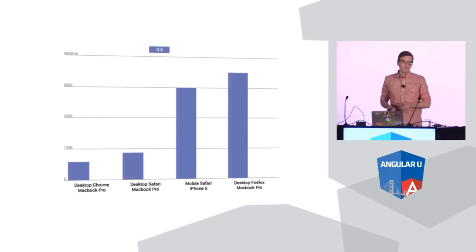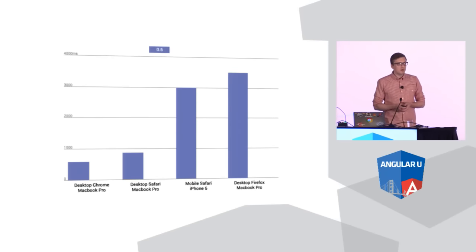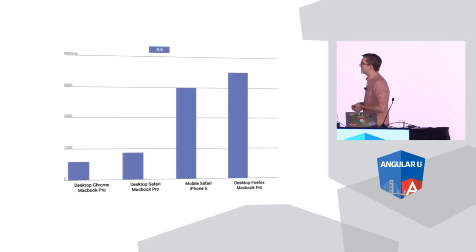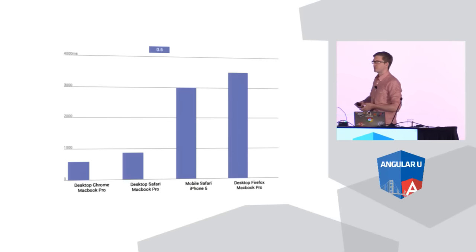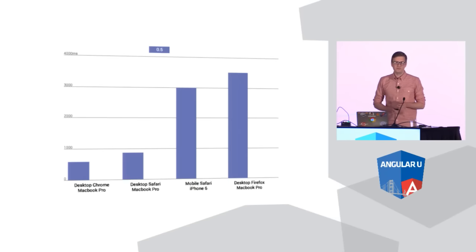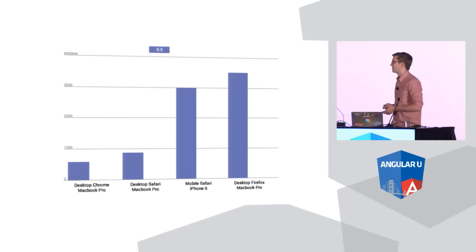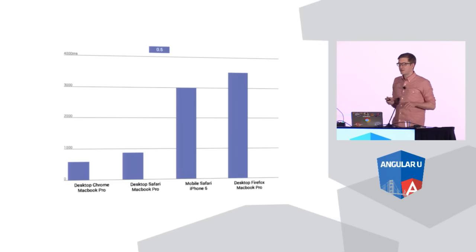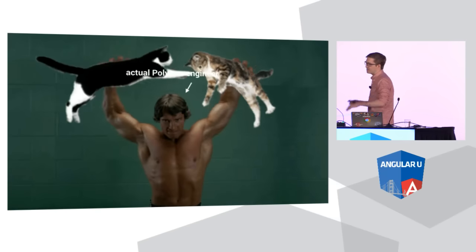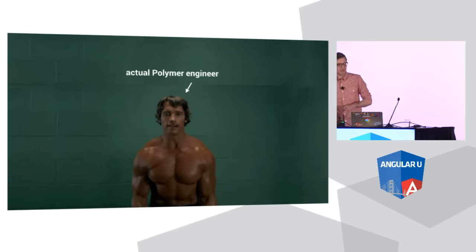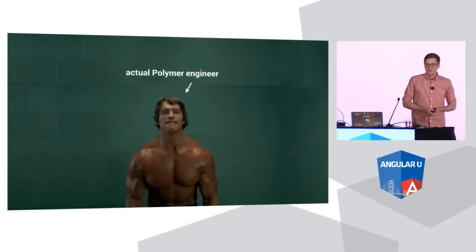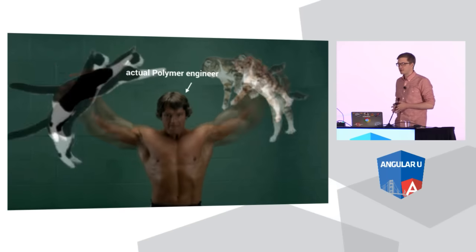In desktop Chrome and desktop Safari, that start-up time was okay. But as soon as you hit mobile Safari and desktop Firefox, it just shot through the roof. People said this was unacceptable. So we used this as a guiding light to see if we could improve upon things. We hit the gym, did a montage, punched some slabs of beef, and basically rewrote the library from scratch focusing on these performance bottlenecks. Around version 0.8, we were able to get performance drastically better — five times faster in mobile Safari, eight times faster in desktop Firefox.